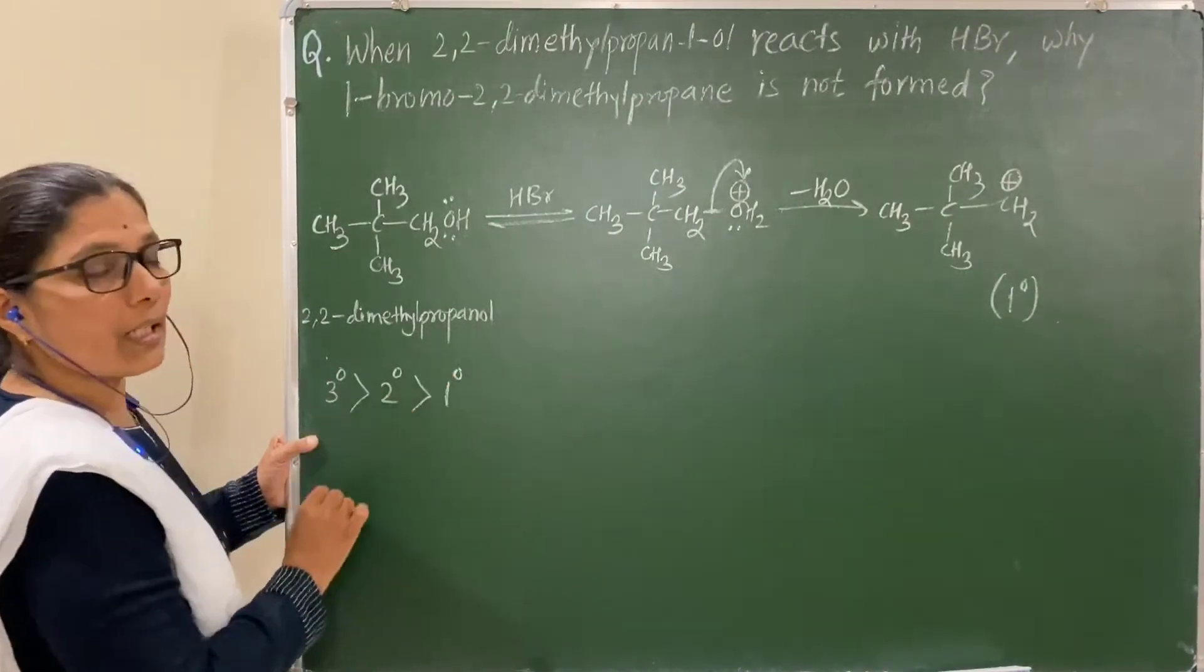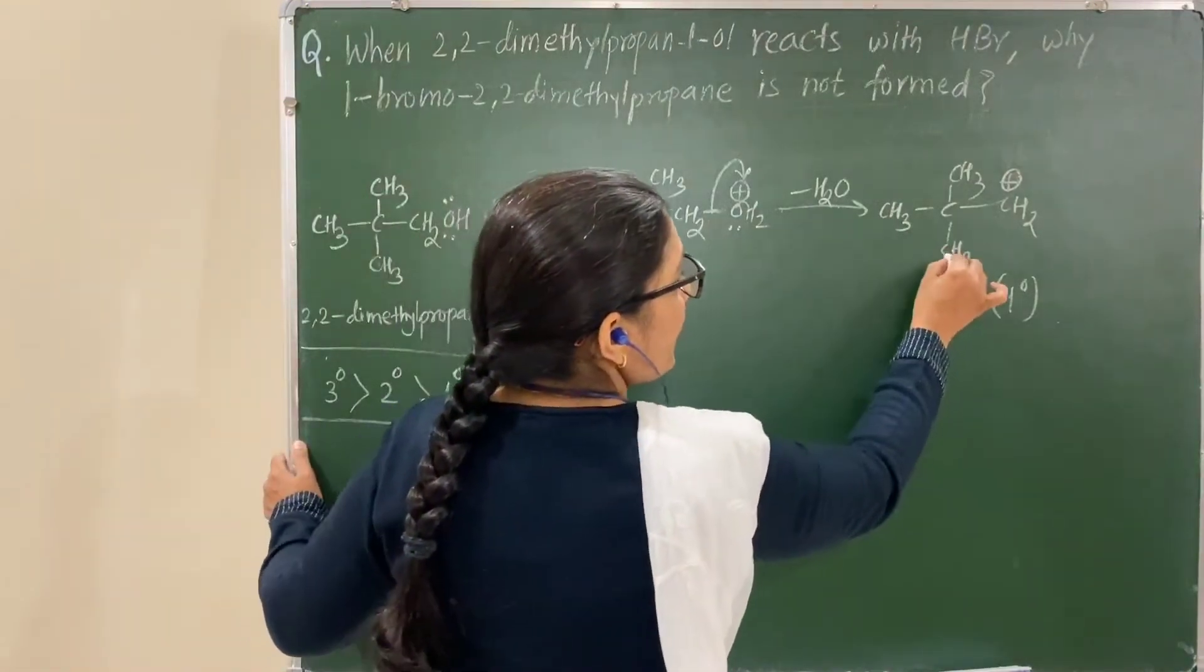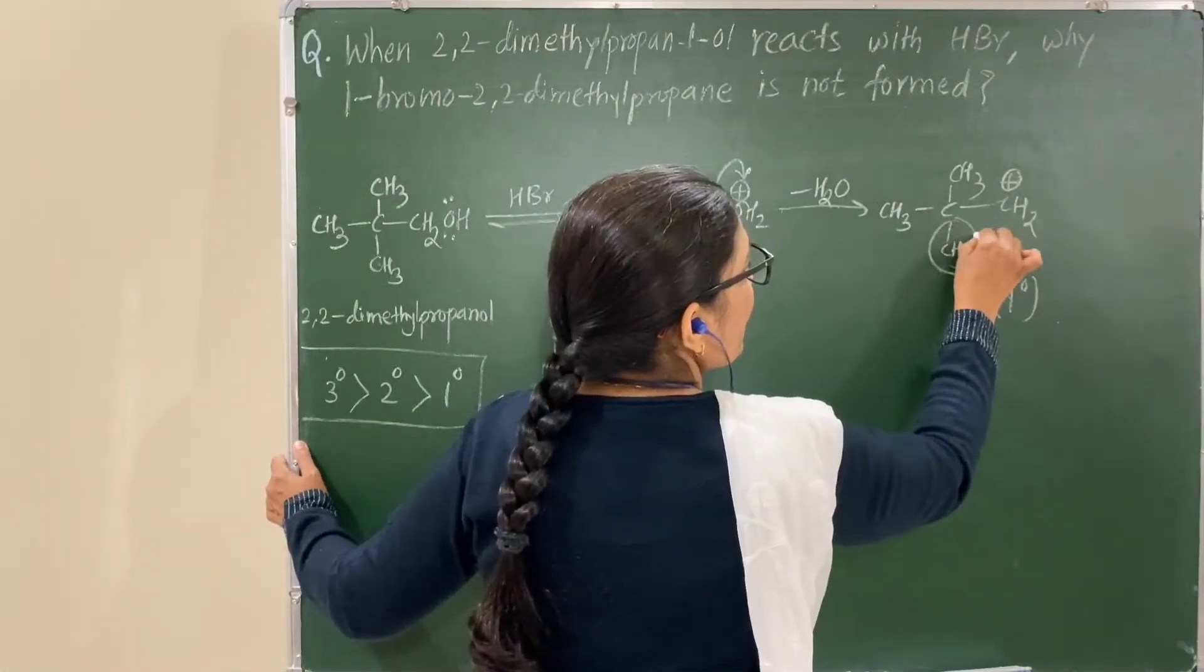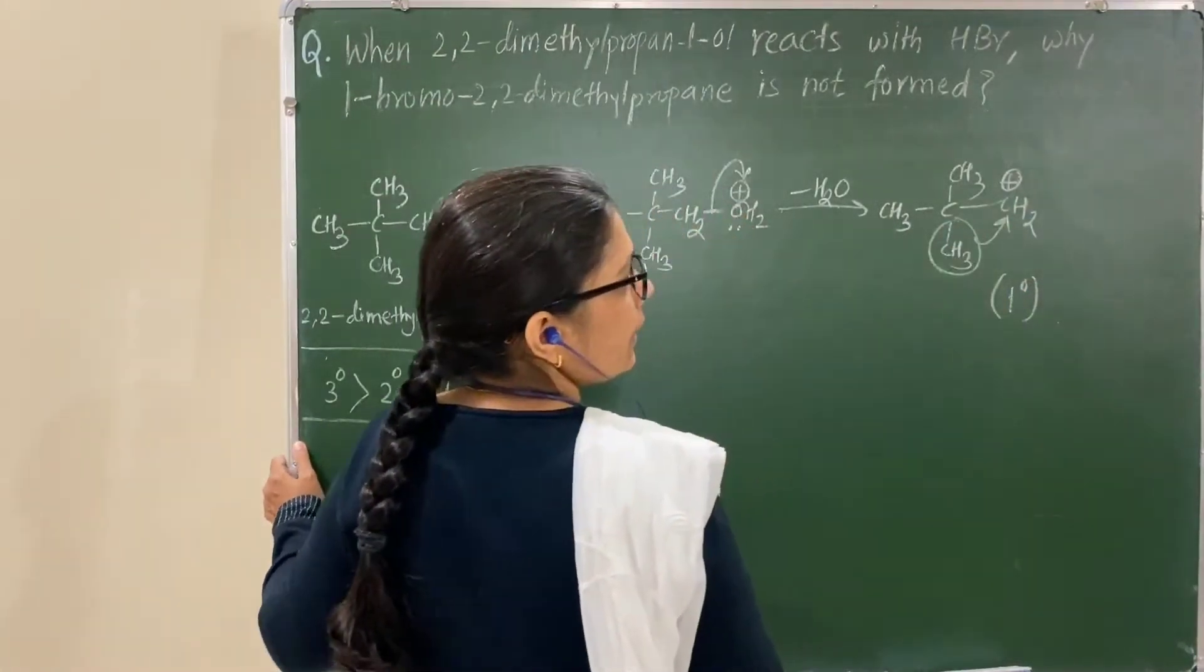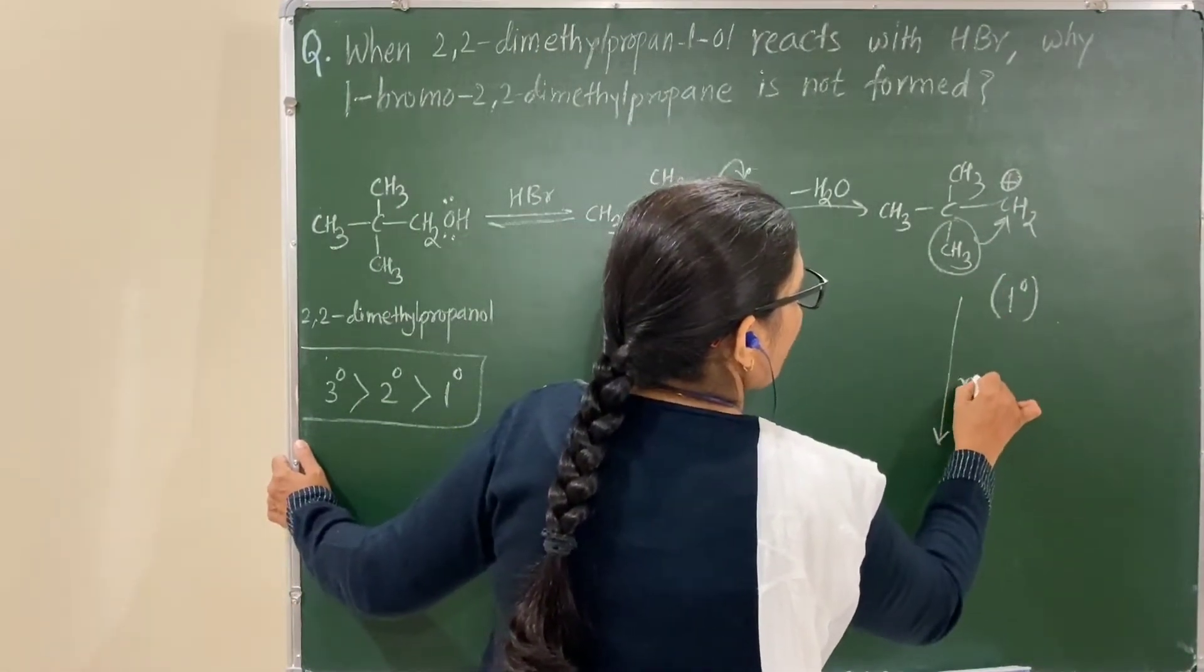You know that tertiary carbocation is more stable than secondary, which is more stable than primary. Here, a methyl group shifts - a methyl shift occurs.